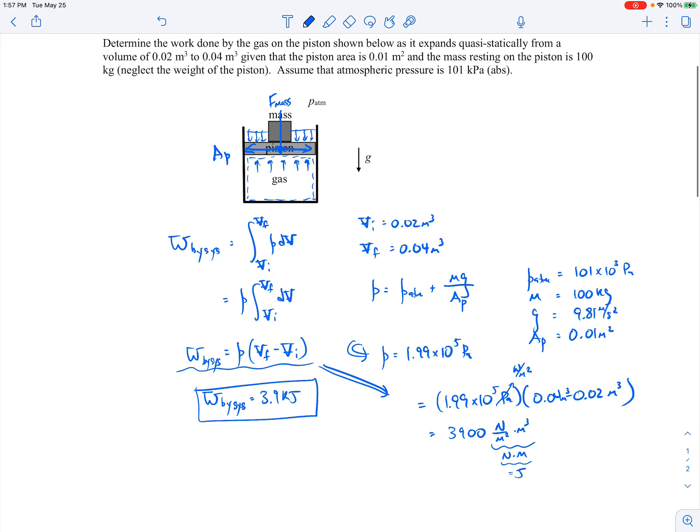And then you could write this as 3.9 kilojoules. So this would be perhaps a better way to do it if time wasn't an issue, just work out the units to make sure you don't make a silly mistake with converting units. Okay, we'll end the example there.